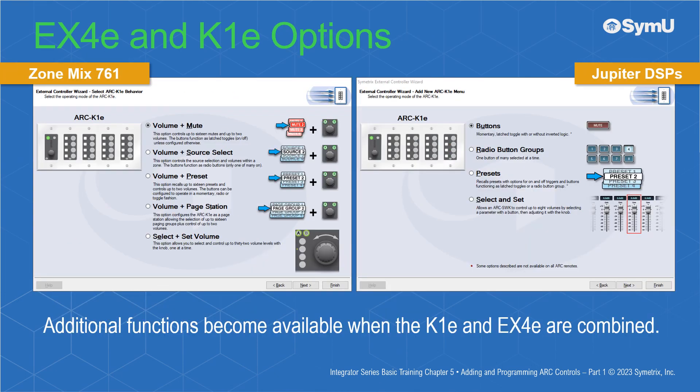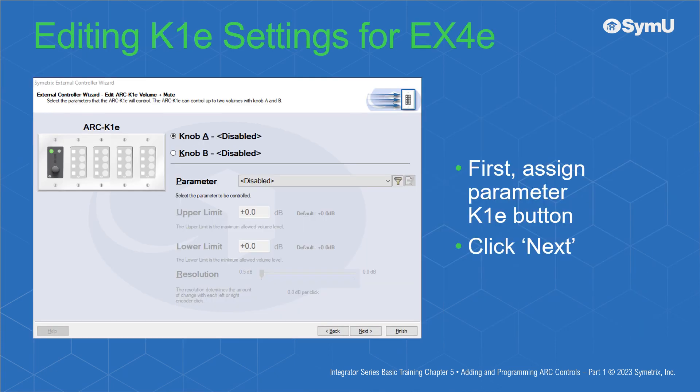Depending on the DSP, once you've selected the K1E plus EX4E to create, some additional menu options become available that allow the K1E to control many more parameters than just two volumes by itself. Selecting nearly every mode option, excluding Select and Set, will open the Edit K1E page first, and setup here is exactly the same as with a single K1E. The current control mode you're working with is displayed at the top of the info line.